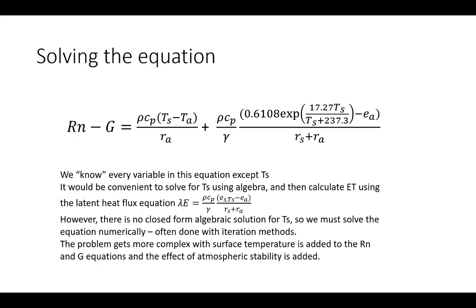We know every variable in this equation except surface temperature. It would be convenient to solve for surface temperature algebraically, find the unique value of Ts that satisfies the energy balance equation, then plug that back into the latent heat flux equation to get ET. However, there is no algebraic solution for Ts, so we have to solve it numerically — which is easy to do with a computer.